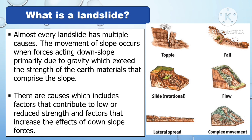Almost every landslide has multiple causes. The movement of a slope occurs when the force acting downslope, primarily due to gravity, exceeds the strength of the earth materials that comprise the slope. Causes include factors that contribute to low or reduced strength, and factors that increase the effects of downslope forces.